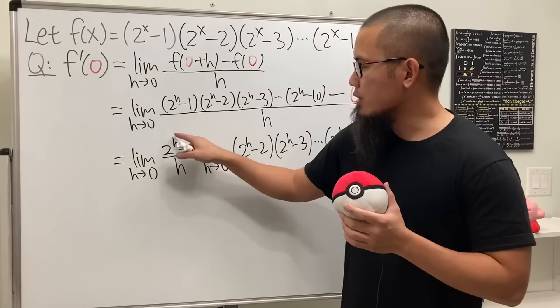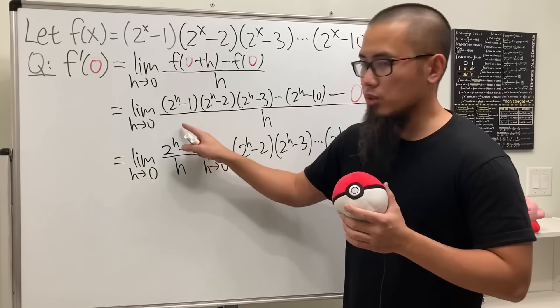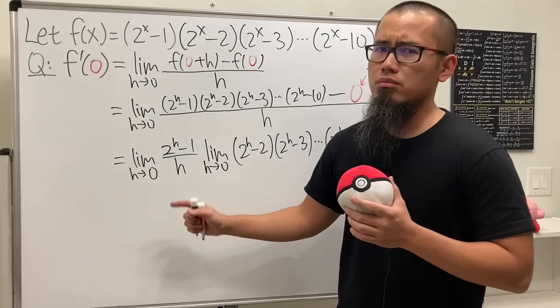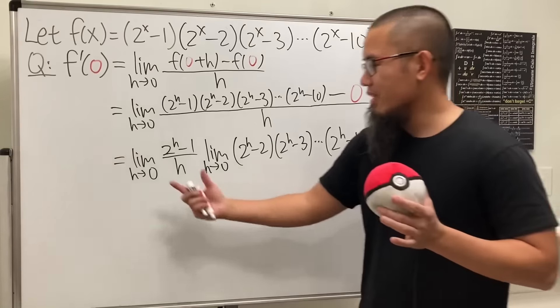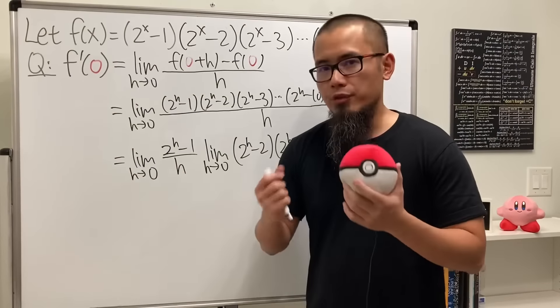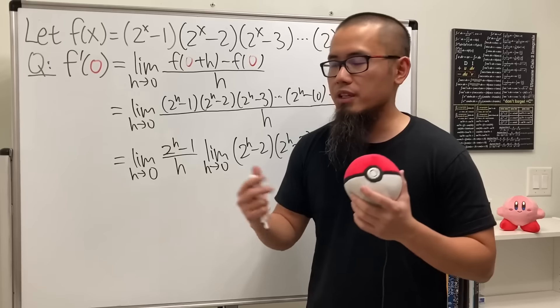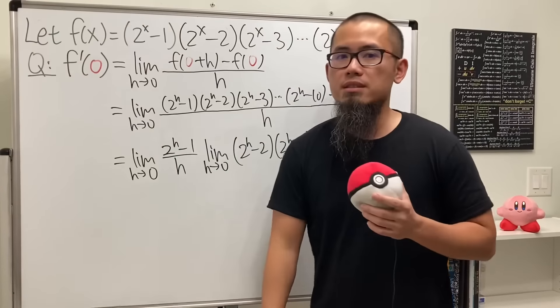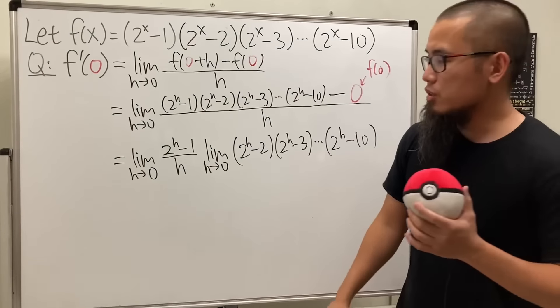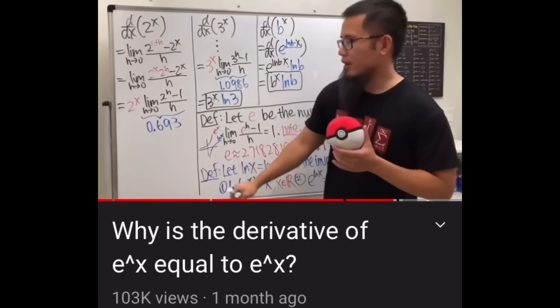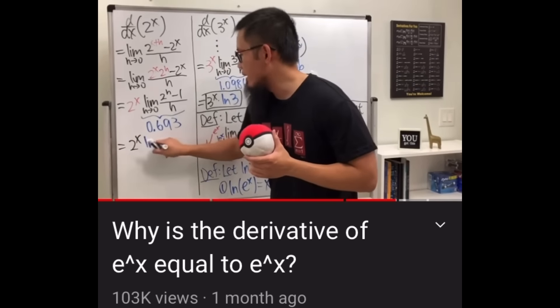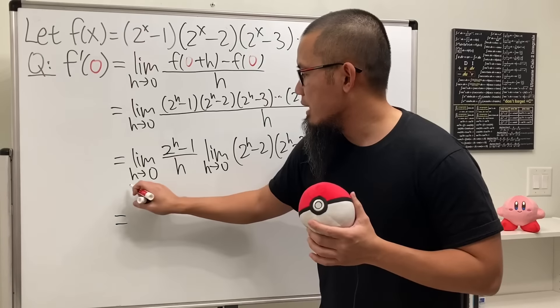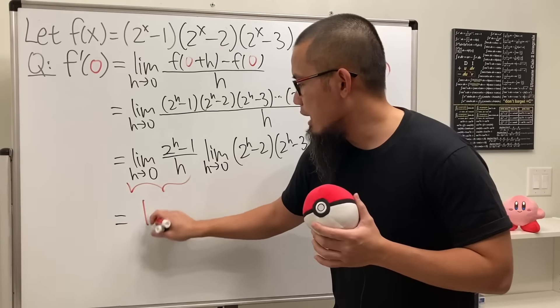Check this out. What can we do? Can we just plug in zero here? Well if we do that, 2^0 is 1, 1 minus 1, zero over zero. Can we use L'Hôpital? No, don't do L'Hôpital, because in fact this limit is required to figure out the derivative of the exponential function 2^x. I did a video on this already so you can check that out. This right here is going to be 2^x times ln(2). Very cool huh? This limit is actually just ln(2).